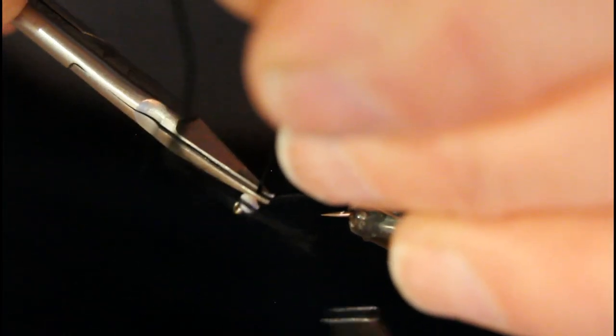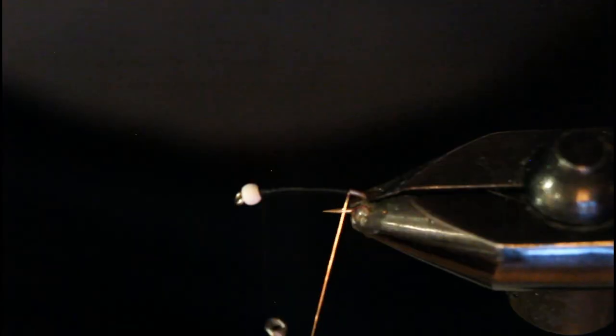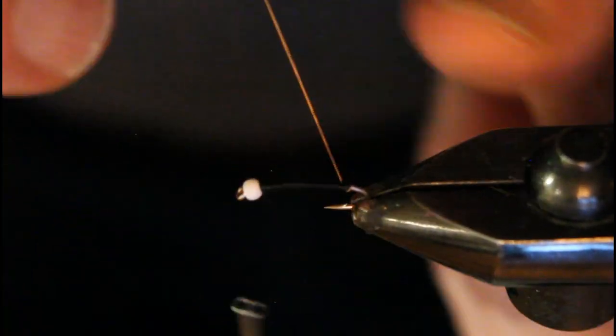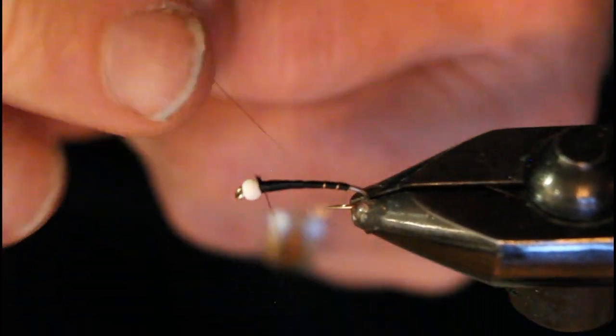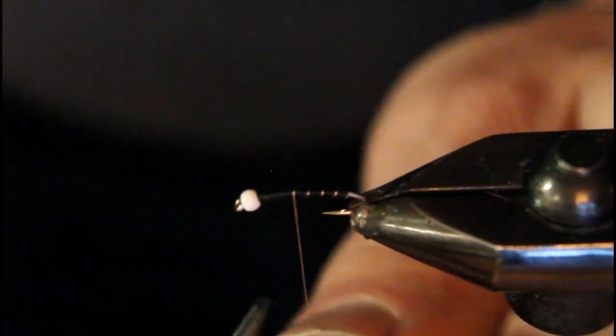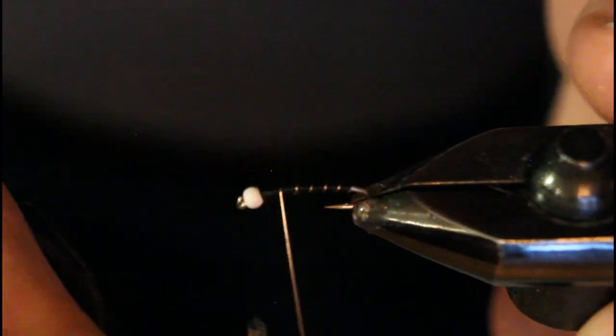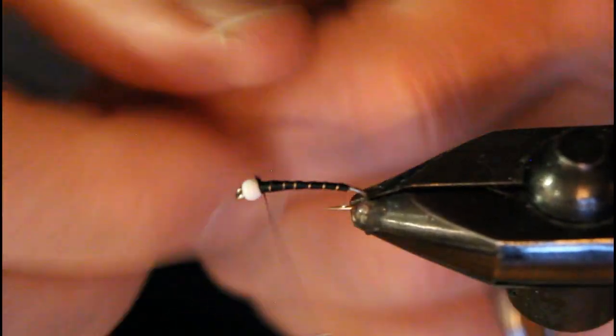Now I'll tie off that floss just behind the bead there with a couple of wraps, cut that off as short as I can but again not worry too much about the tag end. The thread will cover that up. And now I bring forward my wire in nice even spirals, about five to seven spirals. There's two, three, four, five, and six.